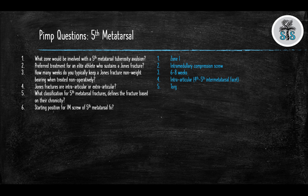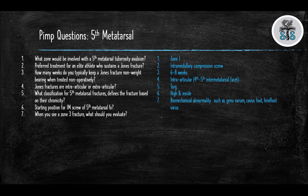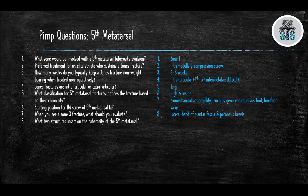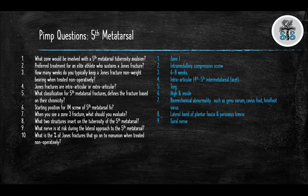What is the starting position for an intramedullary screw for 5th metatarsal fractures? High and inside. When you see a zone 3 fracture, what should you evaluate? Biomechanical abnormalities such as genu varum, cavus foot, or hind foot varus. What two structures insert on the tuberosity of the 5th metatarsal? The lateral band of the plantar fascia and the peroneal brevis. What nerve is at risk during the lateral approach? The sural nerve. What percent of Jones fractures go on to non-union when treated non-operatively? 15 to 30%.